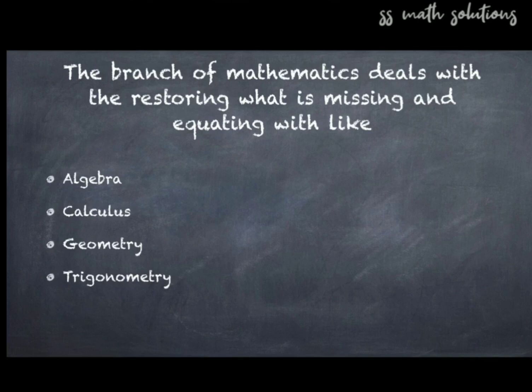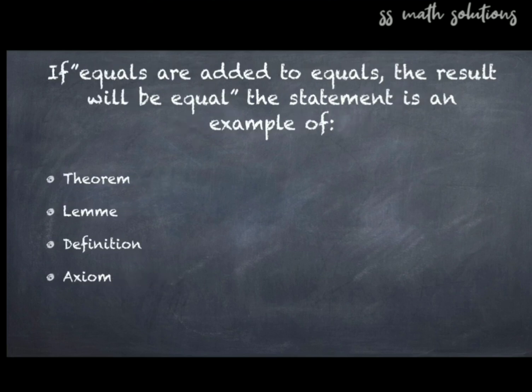Question 9: The branch of mathematics that deals with restoring what is missing and equating with like — algebra, calculus, geometry, or trigonometry? The answer is algebra. Question 10: 'If equals are added to equals, the result will be equal' — this statement is an example of theorem, lemma, definition, or axiom? The answer is axiom.